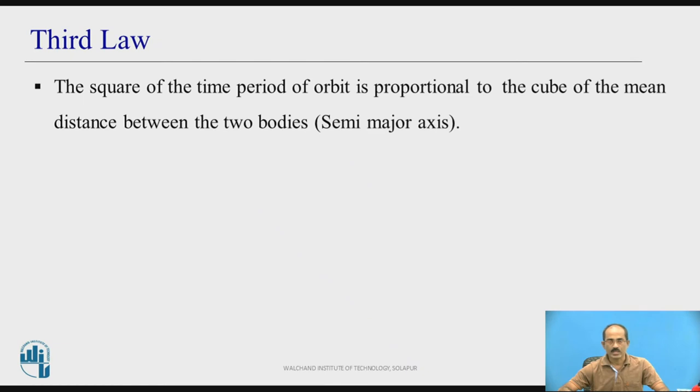Kepler's third law: The square of the time period of orbit is proportional to the cube of the mean distance between the two bodies, that is also called the semi-major axis. Time period is the time taken to complete one orbit by the planet. Square of the time period is proportional to the cube of the mean distance between two bodies, that is also called the semi-major axis.